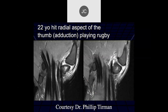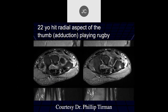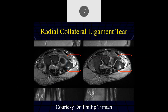22-year-old hit the radial aspect of the thumb playing rugby. Looking at the anterior oblique ligament, it looks irregular — partially torn. The posterior oblique, the proximal portion, looks torn as well. On the axial views — that looks like it could be the abductor pollicis longus tendon — I think you've got a little bone injury here as well. But this is predominantly a radial collateral ligament tear from a probable dislocation.